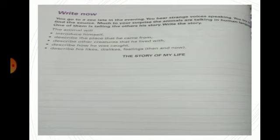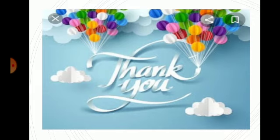Now, I am giving you one work. Take your content book, my dear children. Take page number 32. You go to a zoo late in the evening. You hear strange voices speaking. You try to find the source. Much to your surprise, the animals are talking in human language. One of them is telling the other's story. Can you imagine and write the story? The clues will be given here. The animal will introduce himself, describe the place that he came from, describe other creatures that he lived with, describe how he was caught, describe his likes and dislikes and feelings. Everything should be mentioned. Now, you are going to write the story of my life. Got it, my dear children? That is page number 32 in your content book. I hope children that you all understood this writing part. Thank you children. Thank you.